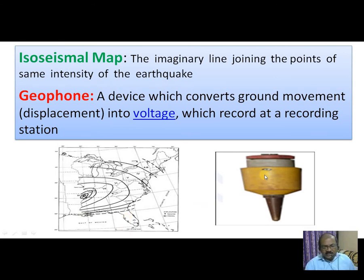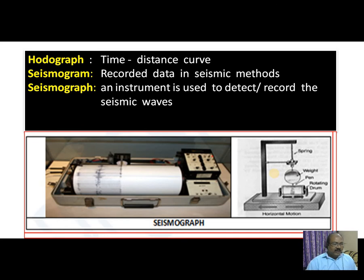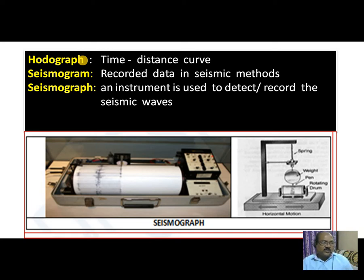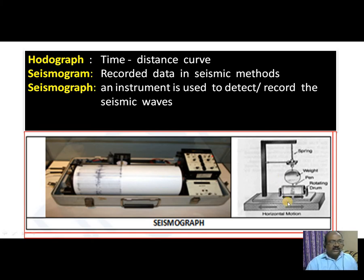Geophone is a device which converts the ground movement into voltage, which is recorded at a recording station. Hydrograph is a time and distance curve. Seismogram is a recorded data sheet in the seismic method. Seismograph is an instrument which is used to detect and record the seismic waves.